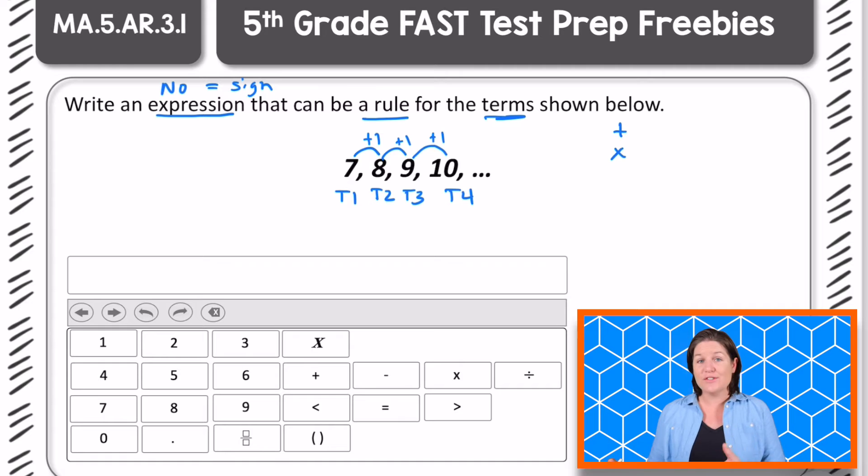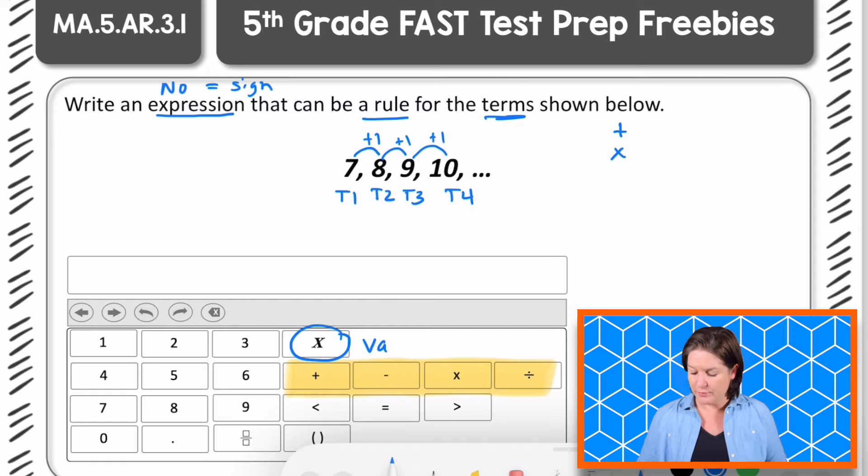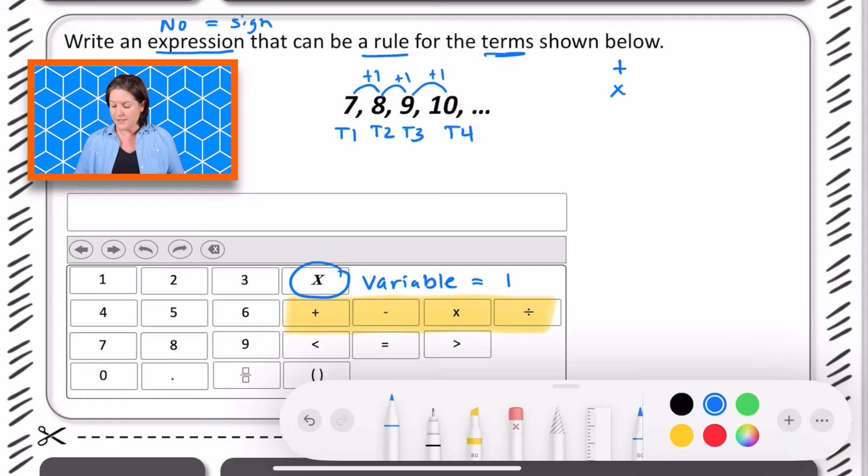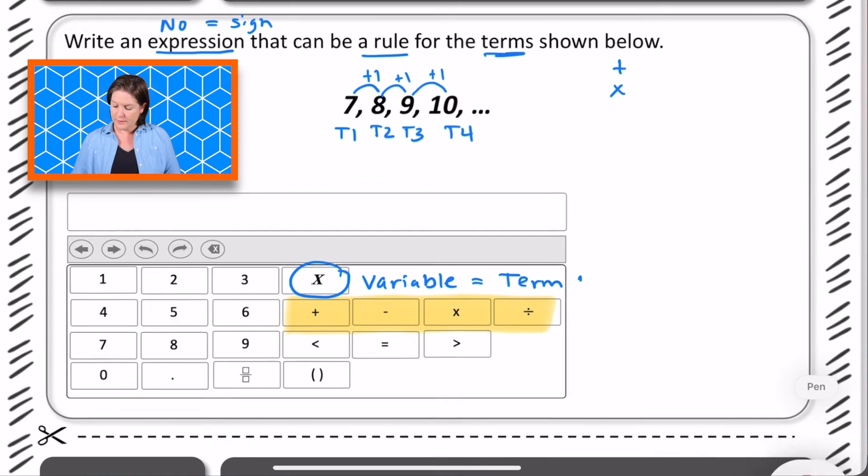And that is great, but the answer is not plus one on its own. And down here, we have our operations, add, subtract, multiply, and divide. And then this is where we have our variable. And that is the thing that is changing. In this case, the x represents the term number.